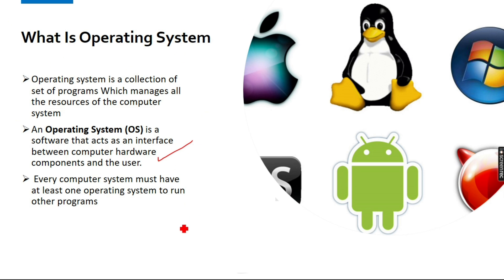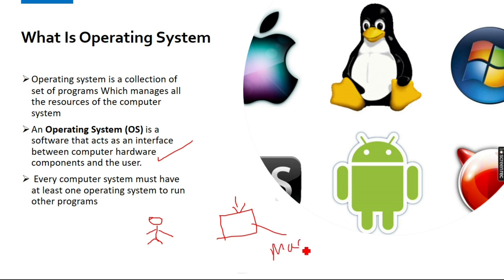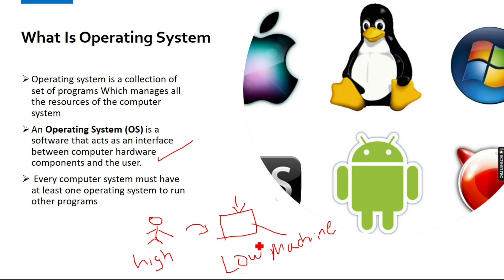For example, the user uses a particular language. We use a certain language in Windows, and there are different technologies and software you can use. You install software on the computer. The computer language used is machine language, which is binary language — a low level language. Users now use high level language, while the computer uses machine level language. So the operating system acts as a mediator and communication model between the user and the machine.